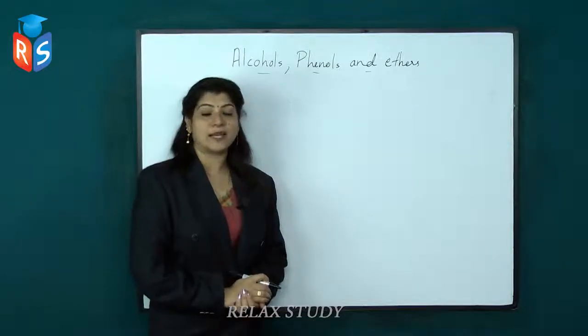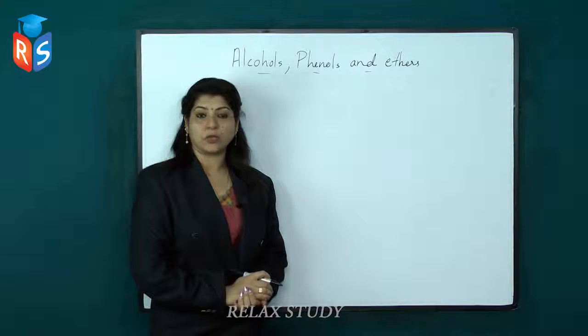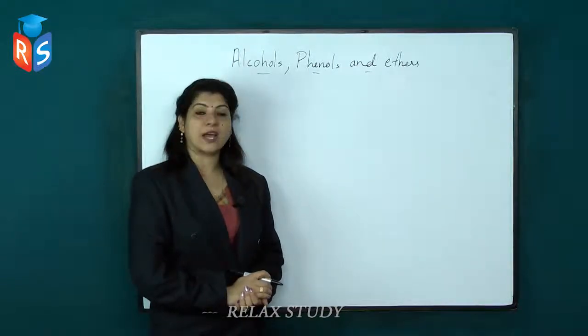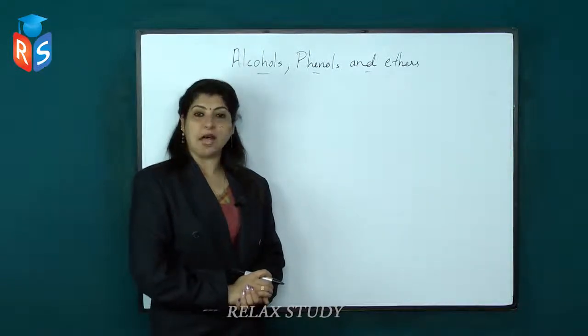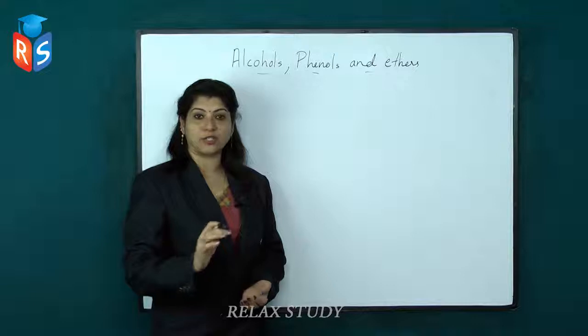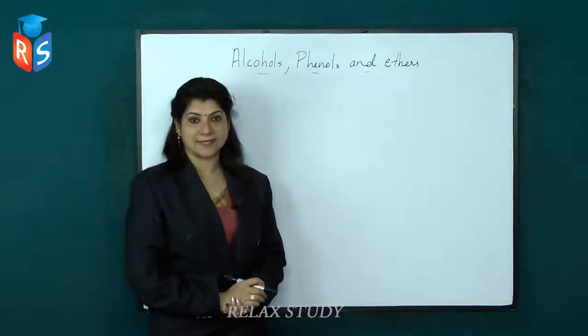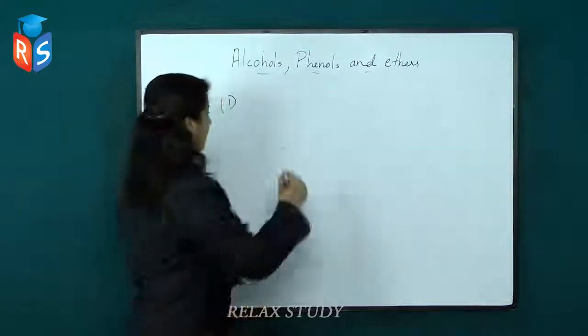Alcohols and phenols are classified into monohydric, dihydric, and trihydric alcohols according to the number of OH groups present in them.